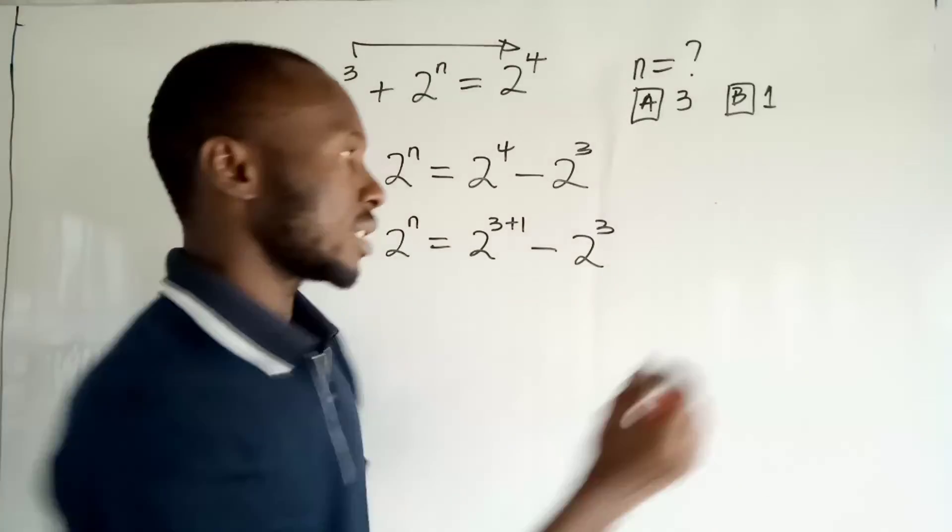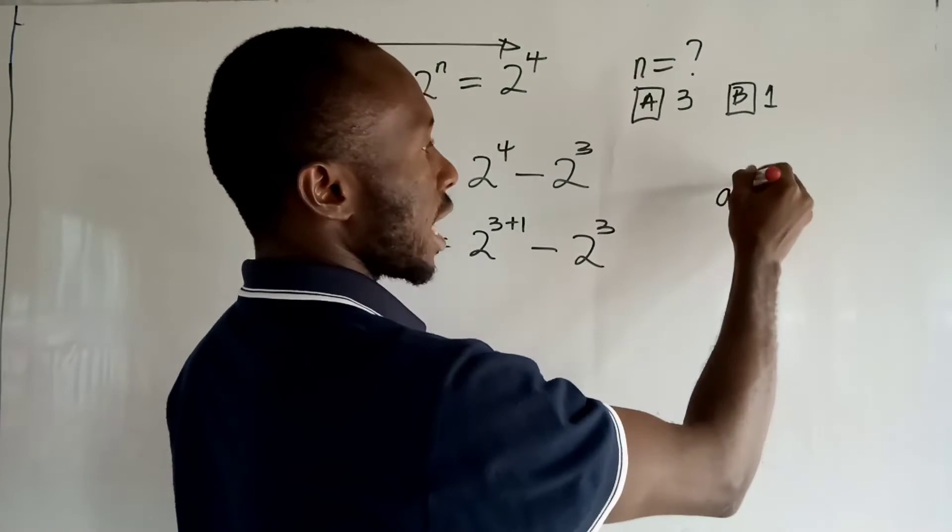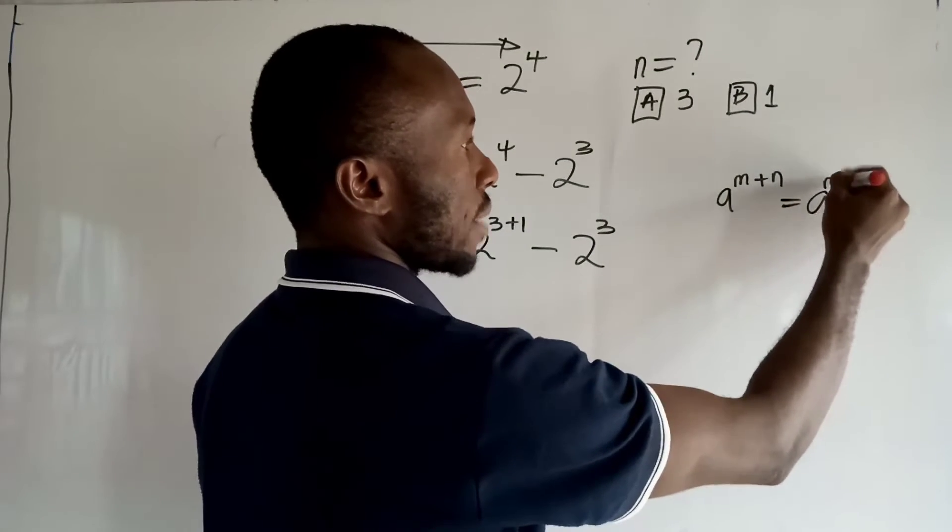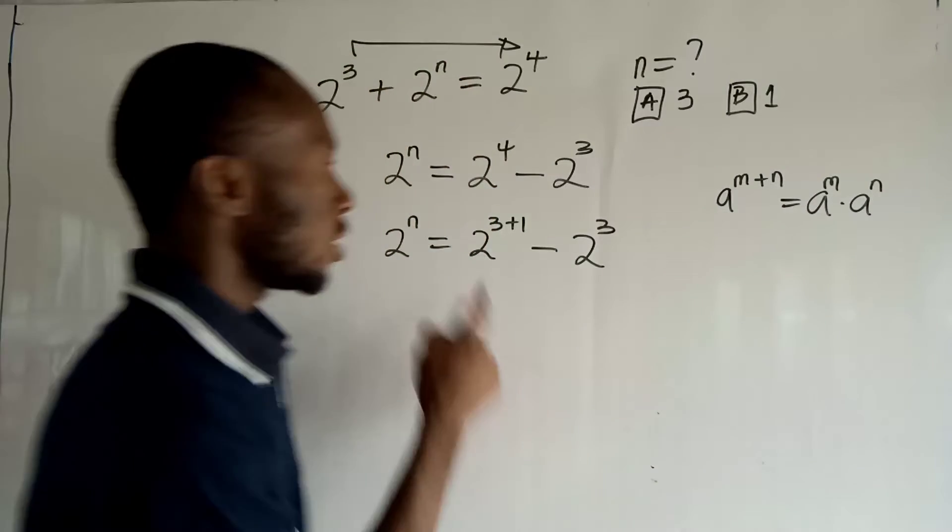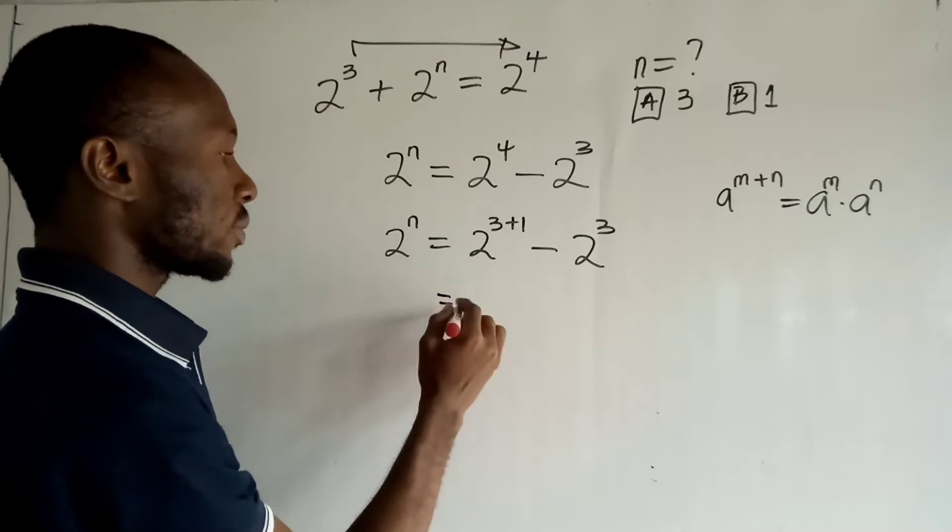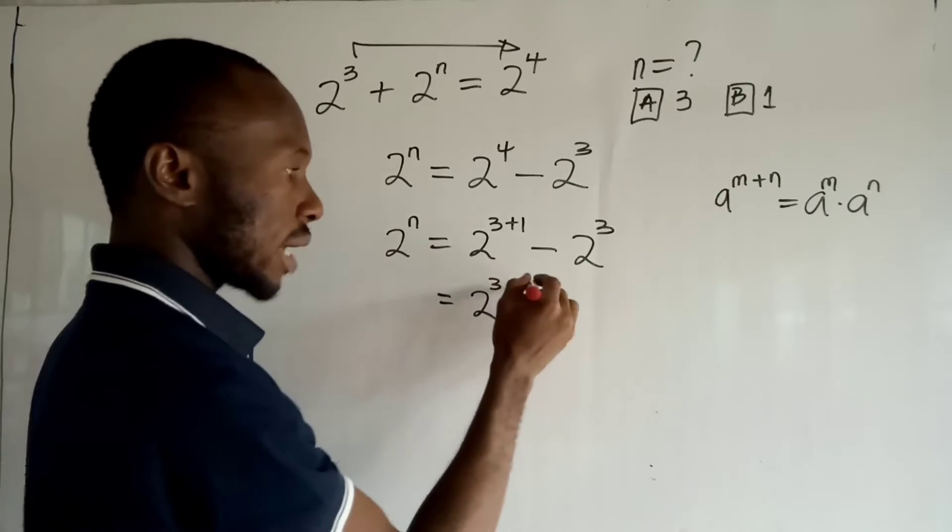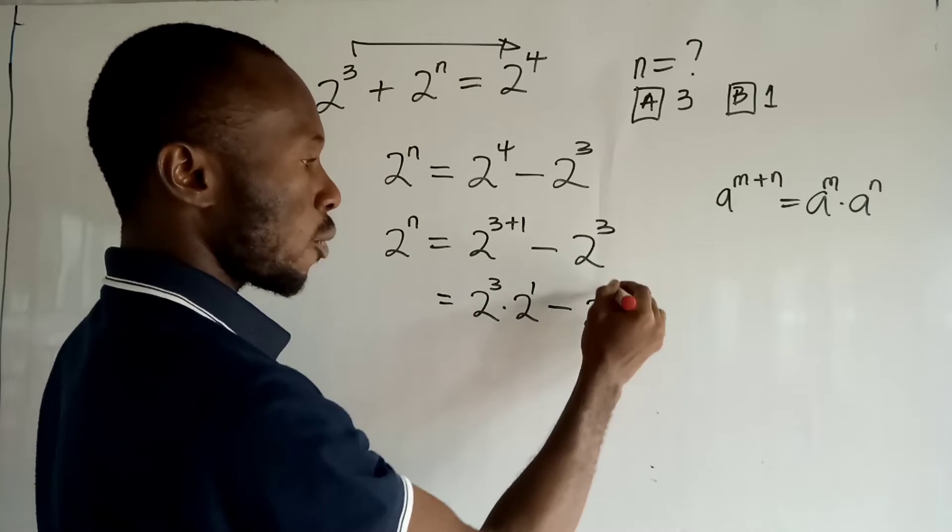And remember the laws of indices. If I have a to the power m plus n, it can also be written as a to the power m times a to the power n. So I will split up this guy. It is going to become 2 to the power 3 times 2 to the power 1, then minus 2 to the power 3.